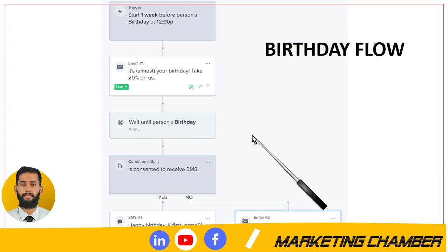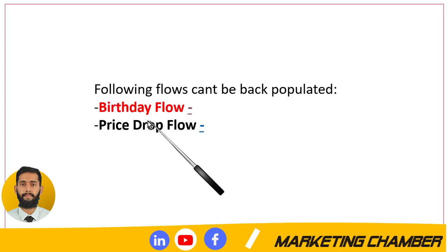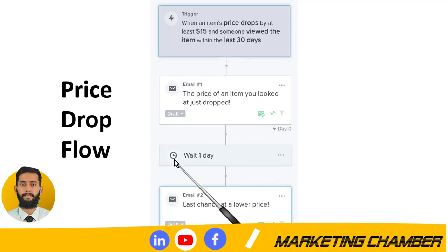The second flow that cannot be back populated is the price drop flow. If the price of a product dropped in the past 10 days and then rose back to a high price, it does not make sense to back populate that flow and send a price drop email when the price is no longer low. Here you can see the price drop flow — these are the two flows you cannot back populate.